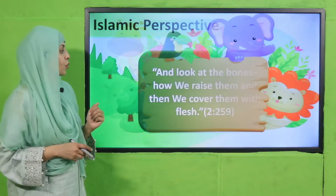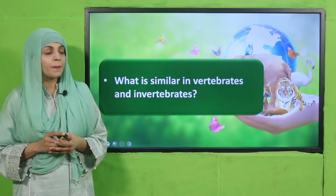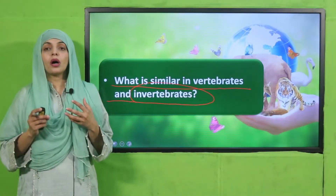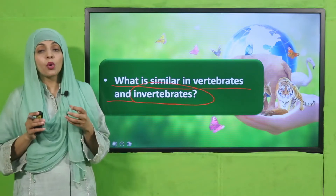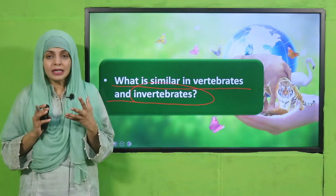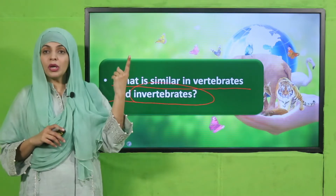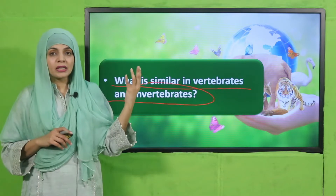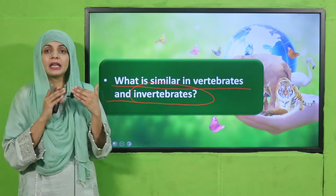Now let's quickly move forward towards the pre-reading question. Listen carefully: what is similar in vertebrates and invertebrates? Some animals have a backbone and some do not, but both groups share similarities. Both need energy and food to live, both need air, and both need water to survive. Both also need shelter. These are the different similarities among vertebrates and invertebrates.